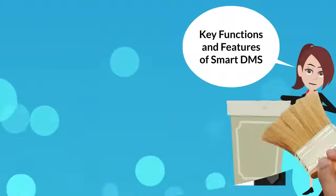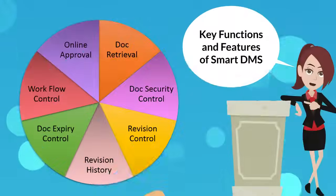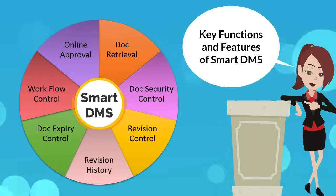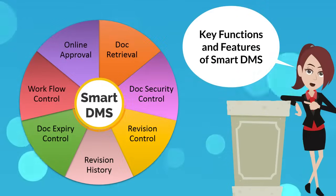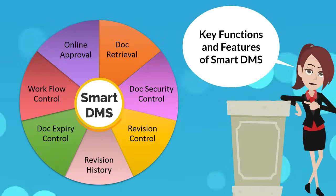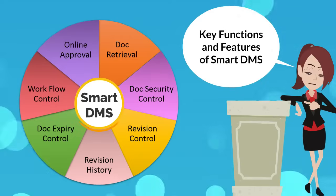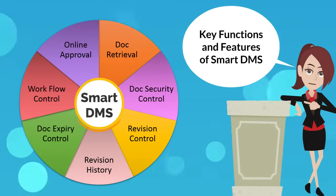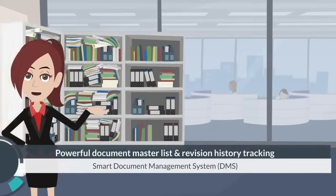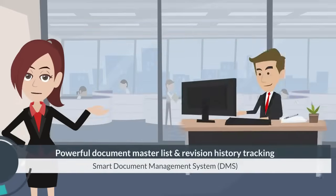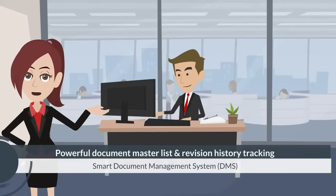Smart DMS is designed to automate the whole process of document management. It can keep track of revision changes for various types of documents. By using Smart DMS, we can track the document revision change history quickly and easily. It has a powerful document access and acknowledgement control function.